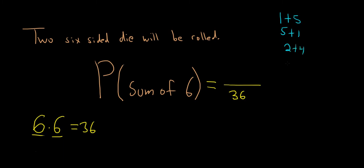Two plus four, or four plus two, and then just three plus three. So we have one, two, three, four, five different ways to get a sum of six.